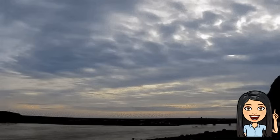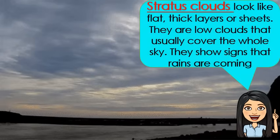The third one is the stratus clouds. They look like flat thick layers or sheets. They are low clouds that usually cover the whole sky. They show signs that rains are coming.